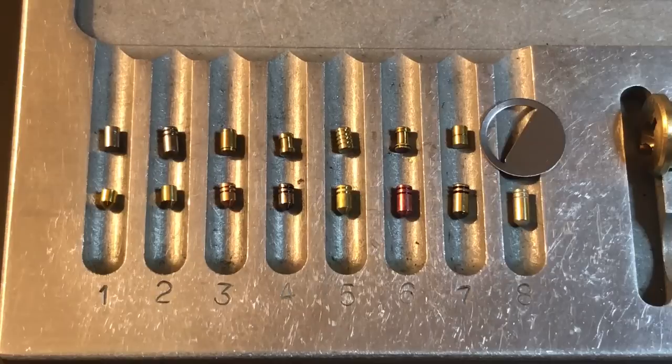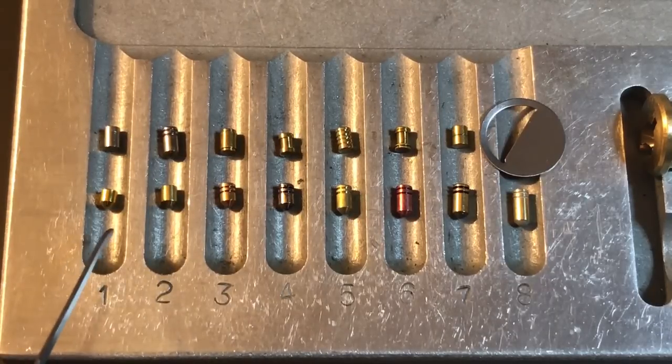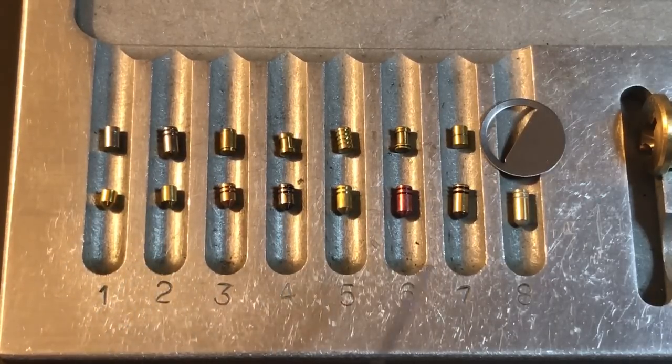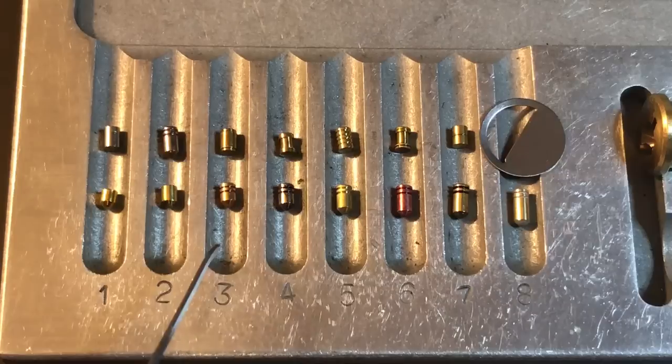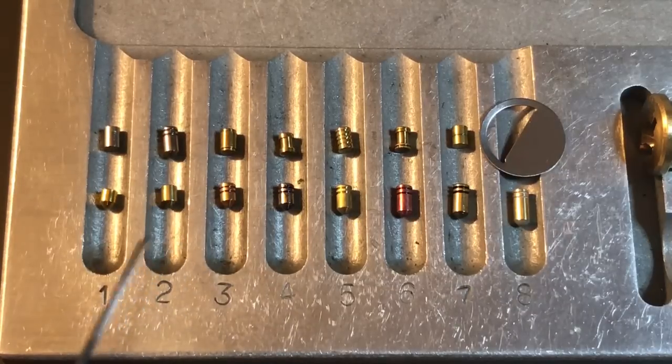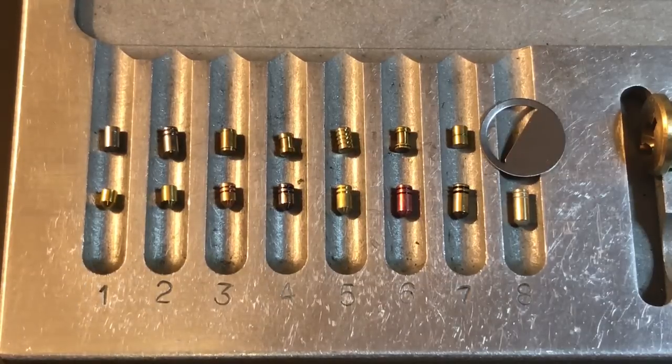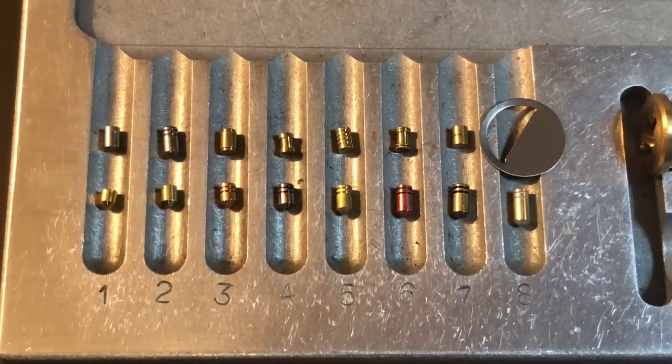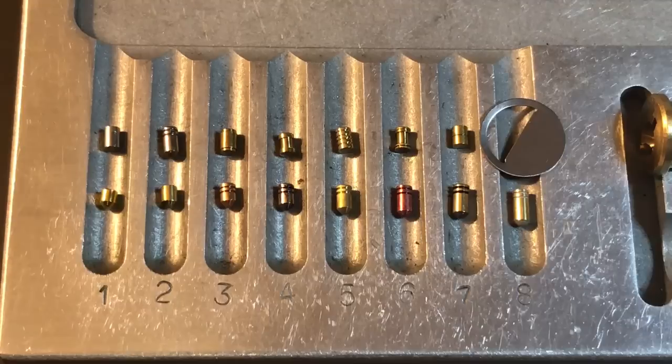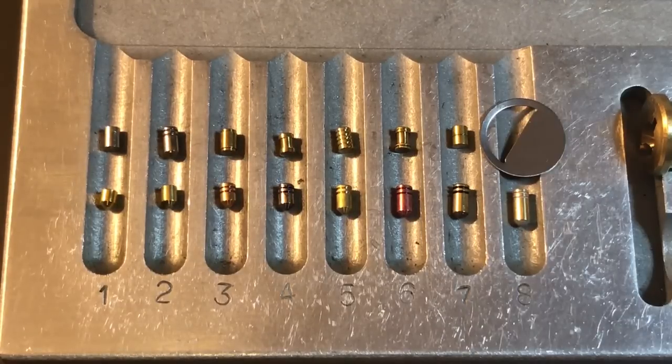So what I'm going to do is in locks that have little unserrated pins among larger serrated pins I am going to give the smaller ones points for being security pins because were the bidding different they would be security pins and I don't want to penalize locks for their bidding.